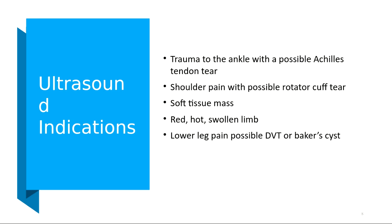Ultrasound indications for musculoskeletal scans include trauma to the ankle and possible Achilles tendon tear. If there's a severe tear where the entire Achilles tendon was torn, the muscle would be all balled up — some things are very obvious, while others are more subtle fluid collections. Another indication would be shoulder pain and possible rotator cuff tear.